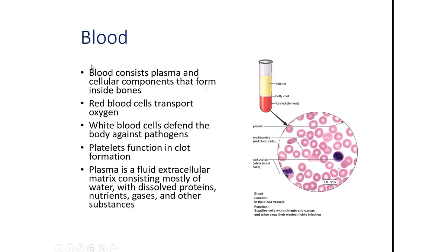Blood consists of a liquid portion called plasma — a yellowish, clear fluid that you can see when you separate blood by spinning it at very high speed — and cellular components. There are three types of blood cells: red cells, which transport oxygen; white cells, which defend the body against pathogens like bacteria, viruses, and fungi; and platelets, which stop bleeding if you have a cut. The plasma contains dissolved proteins, minerals, water, gases, and some waste products.